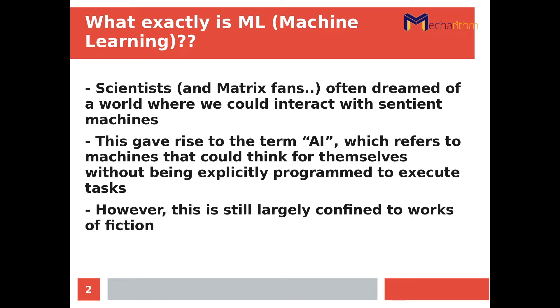So what the term AI means is artificial intelligence. And what artificial intelligence is — it's the ability of the machine to think for itself and execute tasks that it wasn't explicitly programmed to execute.